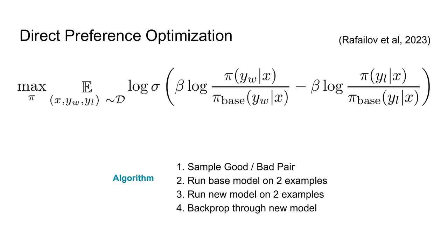We can summarize the whole optimization process in three steps. We first sample a good and bad pair. We then run the base model on these two examples and save the score that it gave them. We then run our new model on these two examples and backprop through this loss function. While this is a little bit more complex than standard language model fine-tuning, it doesn't require any sampling or really any of the tricks that you might be used to with RL. You can really just implement this in PyTorch and backprop through the pi model directly.